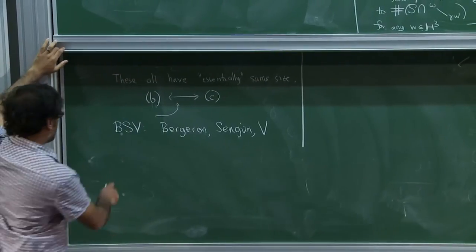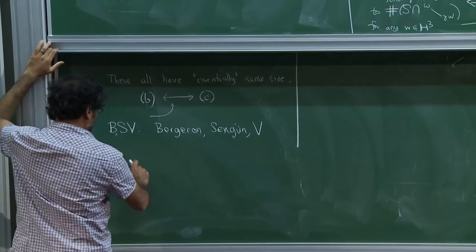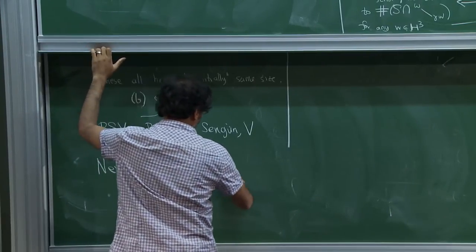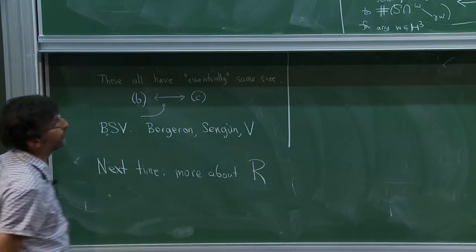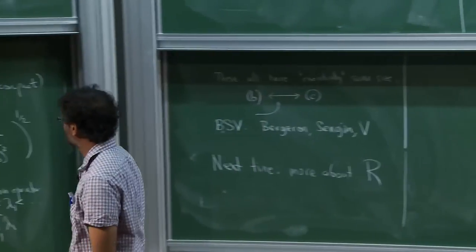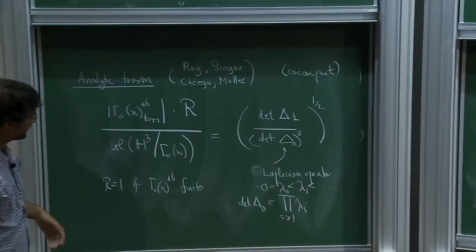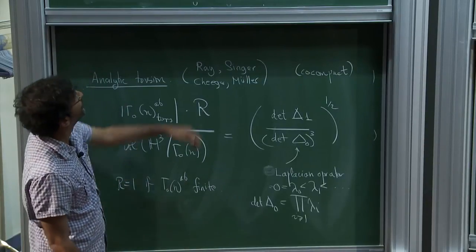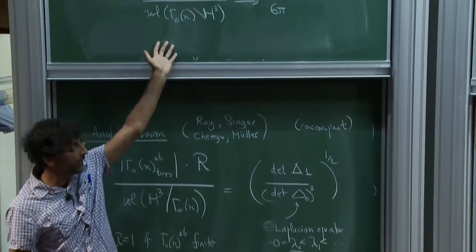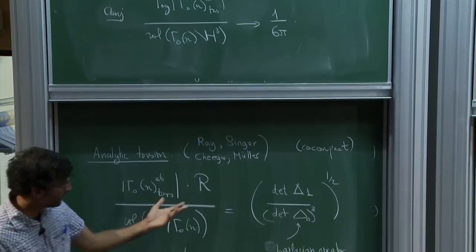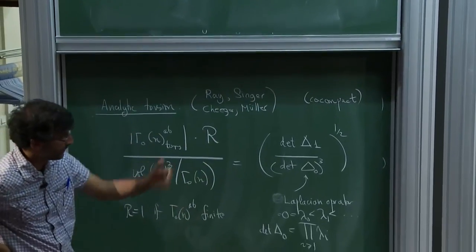That is what R is. Next time we'll talk more about R, especially how it's related to L-functions. Now let me pause and tell you what we know how to prove in the direction of this conjecture. The only real tool we have is this formula, but even here there are still many obstructions.